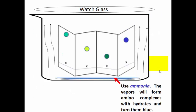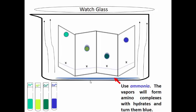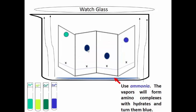We've already developed our plate, and now we've added ammonia to the developing chamber. Let's recall what our spots are: iron, nickel, copper, and cobalt. Now let's watch what happens as the ammonia vapors saturate the development chamber — you can see that two of the spots actually turn dark blue. Ammonia turns hydrates blue by ligand displacement: the ammonia kicks off water and replaces it, and those complexes show up as a navy or dark blue.